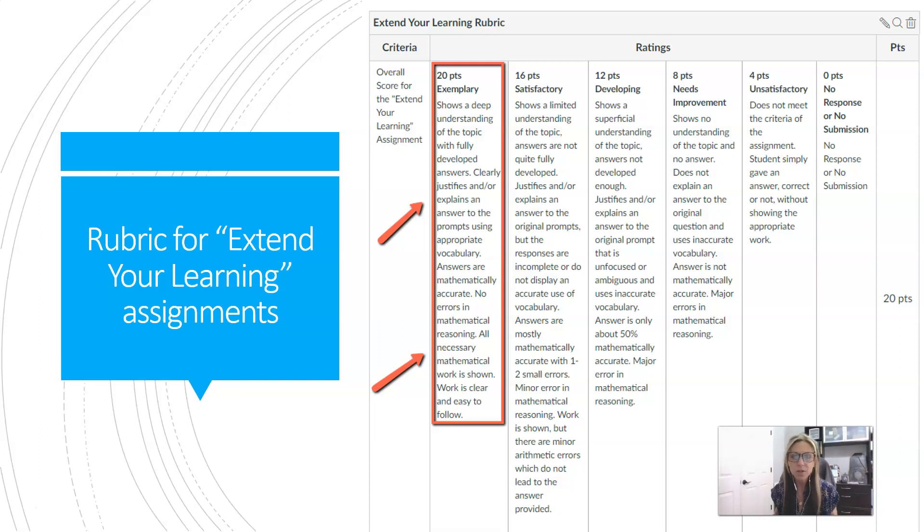If you want to earn a 20 out of 20 on your assignment, you want to meet the criteria in the exemplary column. First, you need to show a deep understanding of the topic with fully developed answers that means you're clearly justifying and explaining your answer to the prompts.